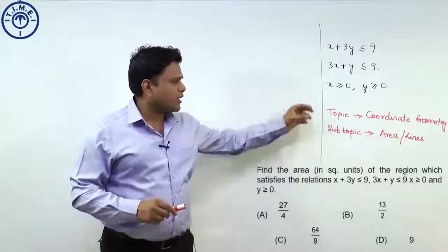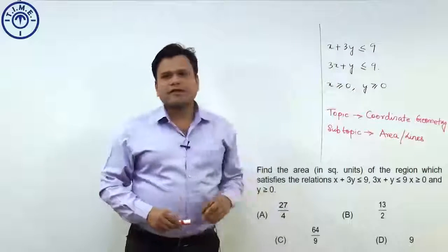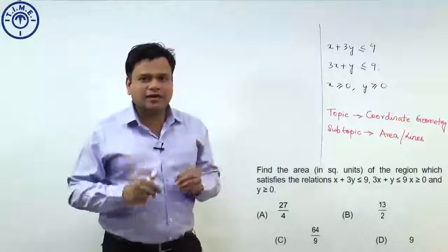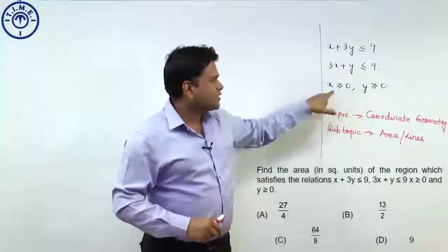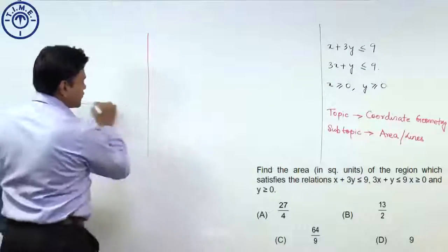From this topic coordinate geometry, and within this about the lines, you can see that the equation of the lines are given and we need to find out the area bounded by the regions. This means the last point implies that we are dealing with the first quadrant.